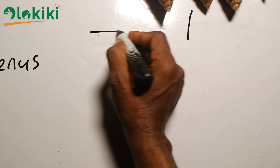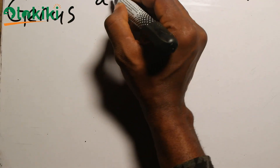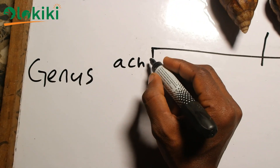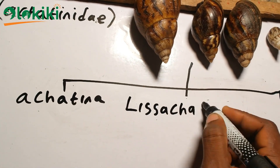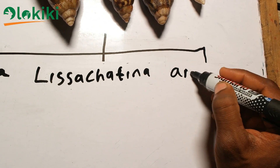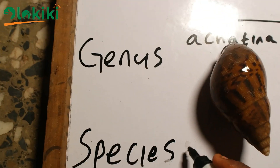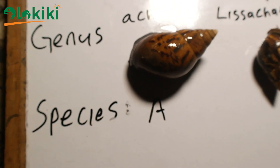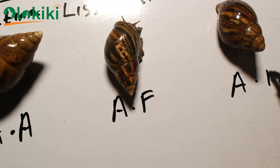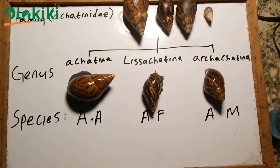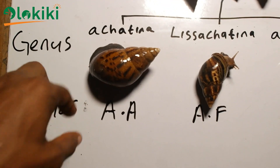In order to understand more about the snails in this family, they are subdivided into groups depending on their different characteristics, called the genus. In this subgroup we have the genus Achatina, the genus Lissachatina, and the genus Archachatina as the major popular groups under this family. Under each genus we also have different species depending on their characteristics — that's where we have the Achatina achatina, the Achatina fulica, and the Achatina marginata.